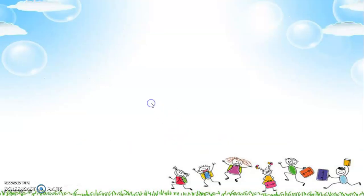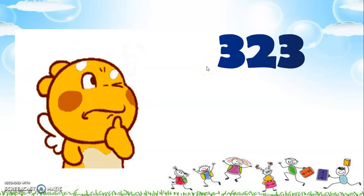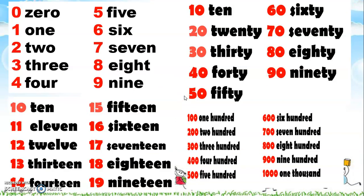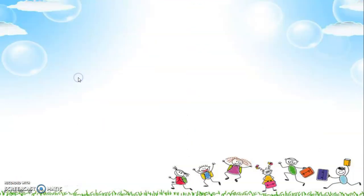Another example will be three hundred twenty-three. Again, it's three hundred twenty-three. Let's go back to our number chart. We need to look for the word for three hundred — three hundred is there. And then of course we have twenty, and the last one will be three.